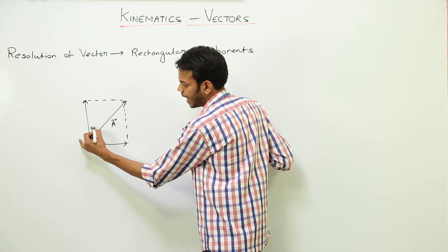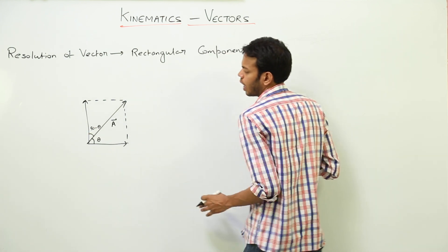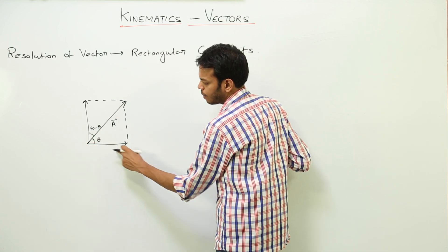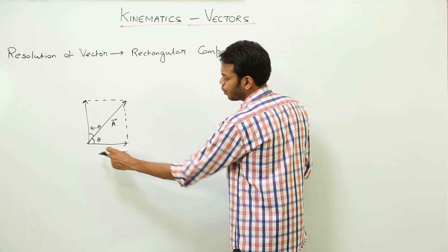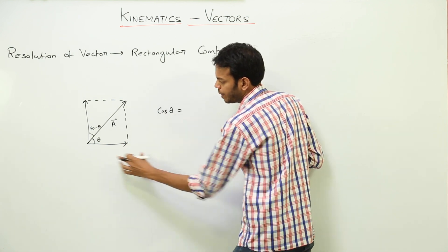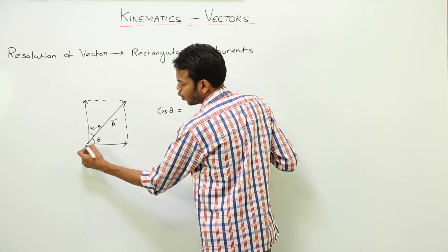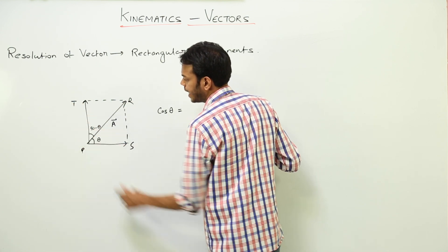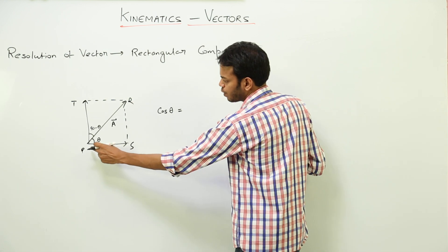Now I want to write the magnitude of this in terms of this. So this vector is going to become, if I use cos theta - cos theta would be base. You want to name it? Let it be P, Q, S, T. So cos theta is base, which is PS upon PQ.